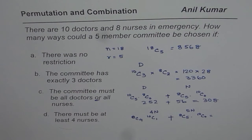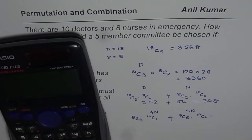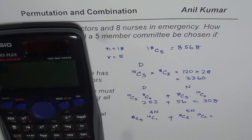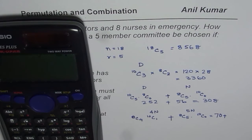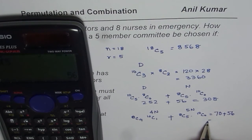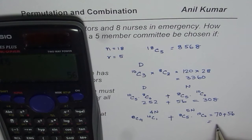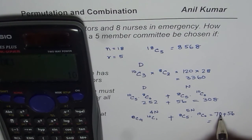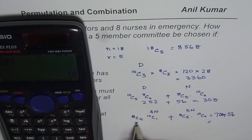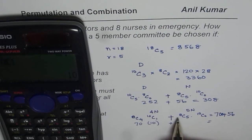Calculating Part D: 8C4 equals 70, and this must be multiplied by 10C1 which is 10, giving 700. Then 8C5 equals 56, multiplied by 10C0 which is 1, giving 56. Adding 700 plus 56 gives us 756 as the answer for Part D.